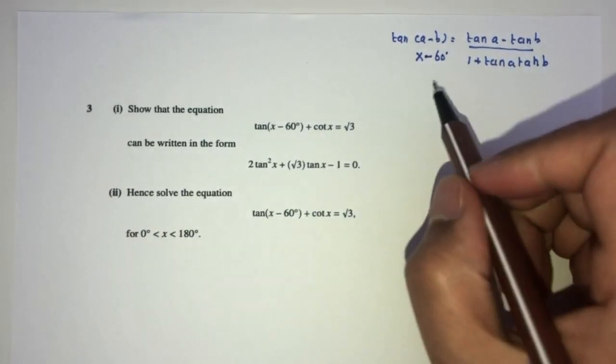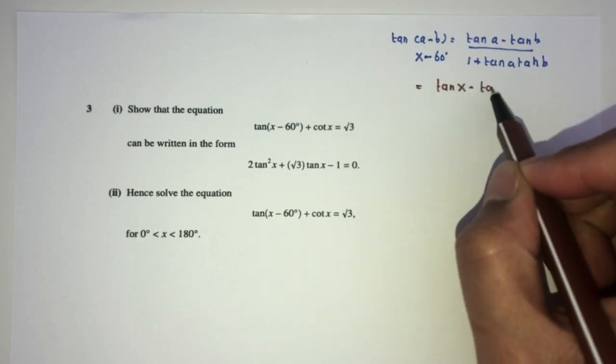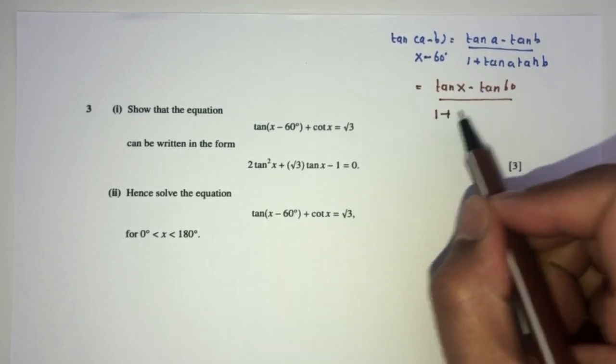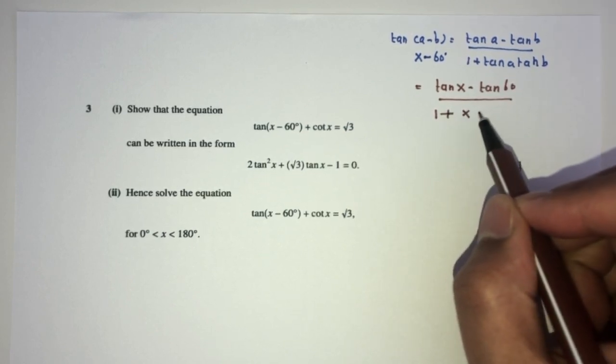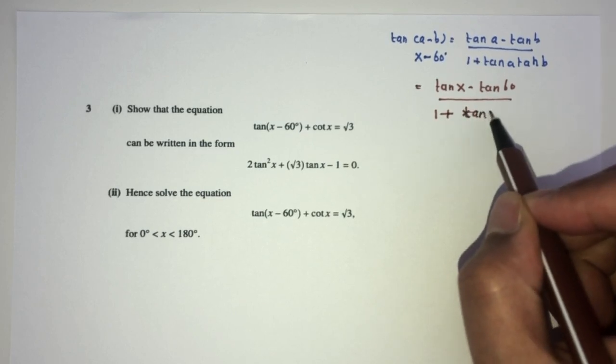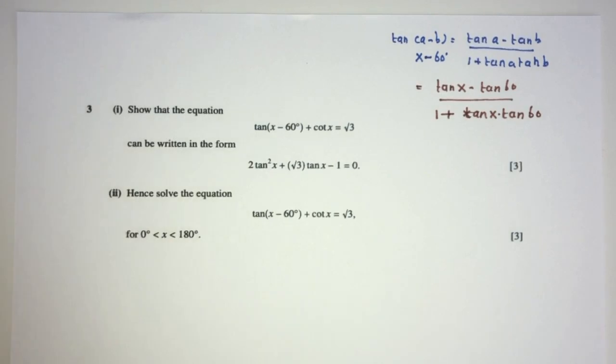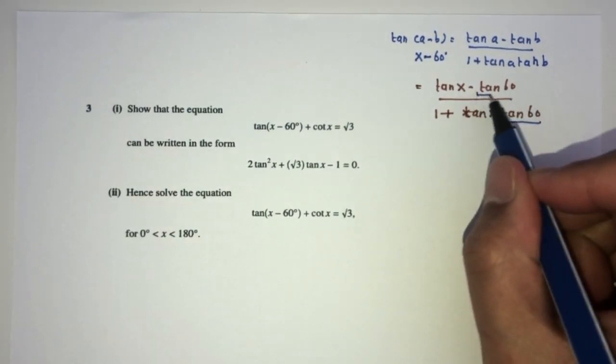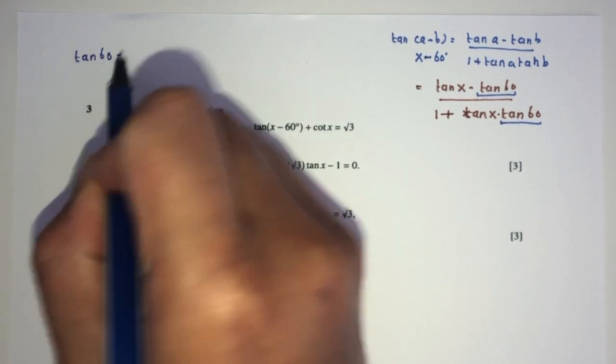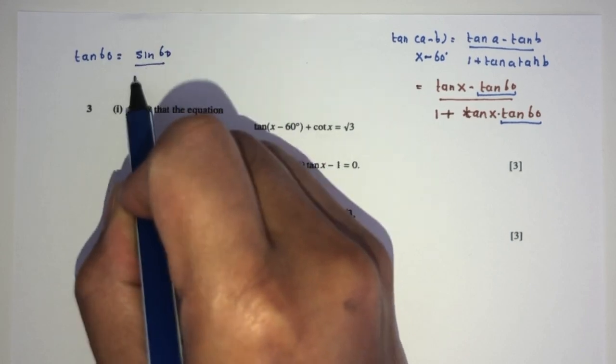Let's see what happens. You will have tan of a, which is x, minus tan of b, divided by the value of 1 plus tan of a, which is x, times tan of b. Tan of x, tan of 60. So replace and see what happens. Now what is this value? We should know what is tan of 60 as exact value. It is basically sine of 60 over cos of 60. This is root 3 over 2, this is half.